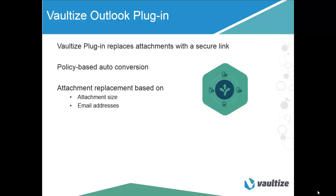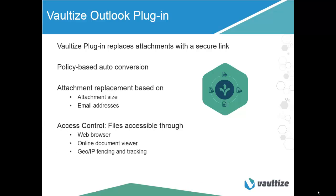Save server and mailbox storage by up to 90% and reduce network utilization using Vaultize's smart deduplication technology. Files are accessible to users through a web browser and the Vaultize online document viewer. You can set access rights on the links, restrict access to sender and receiver only, restrict access or downloads, or make files viewable only through the online document viewer. IT controls the use of the plugin using policies for attachment replacement and sharing, and access control with geographic and IP fencing. There is also geographic and IP tracking.